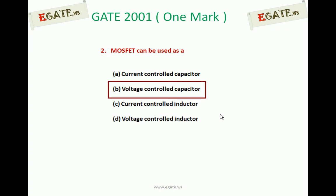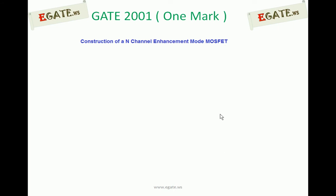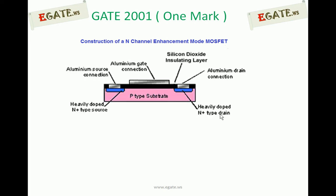We see the details now. First, we should know the construction of N-channel enhancement mode MOSFET. We are taking the example of N-channel enhancement mode. Always N-channel enhancement mode will be fabricated under a P-type substrate. Into that, two heavily doped N-regions — that is N-plus regions — are going to be diffused. One acts as source, the other acts as drain.